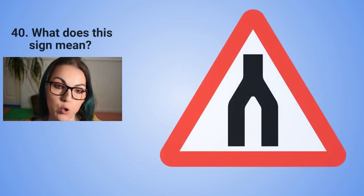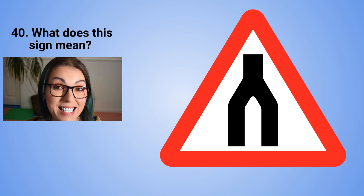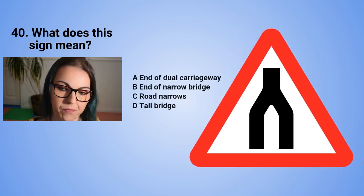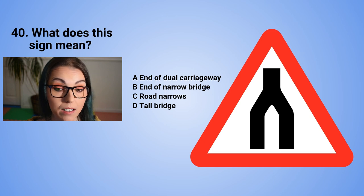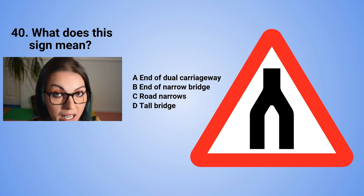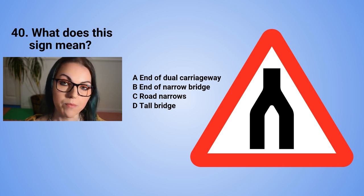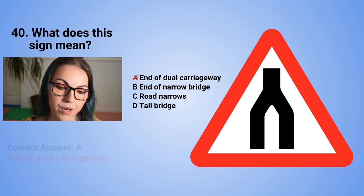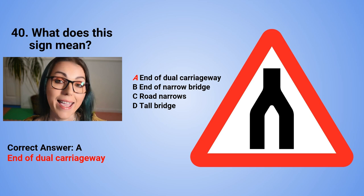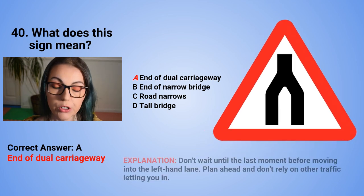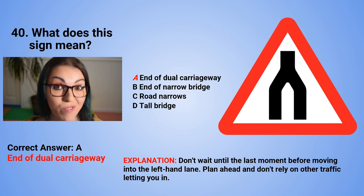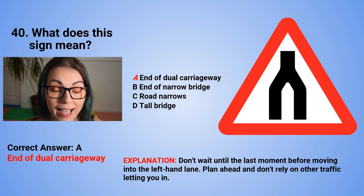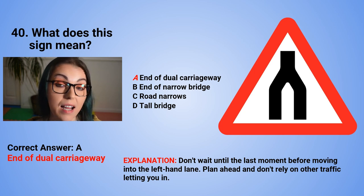Question 40: What does this sign mean? A. The end of a dual carriageway. B. The end of a narrow bridge. C. Road narrows. Or D. Tall bridge. The correct answer is A — the end of a dual carriageway. Don't wait until the last moment before moving into the left-hand lane. Plan ahead and don't rely on other traffic letting you in.